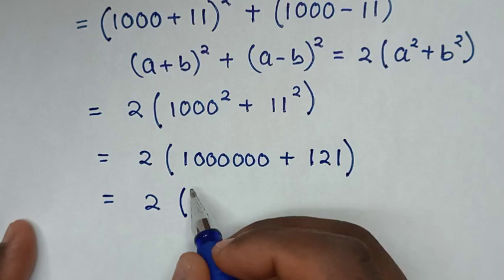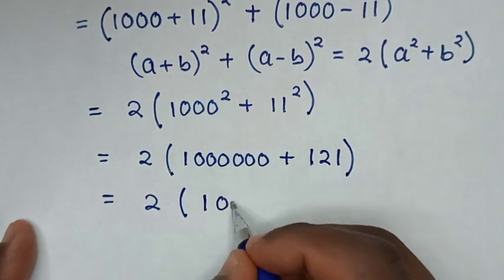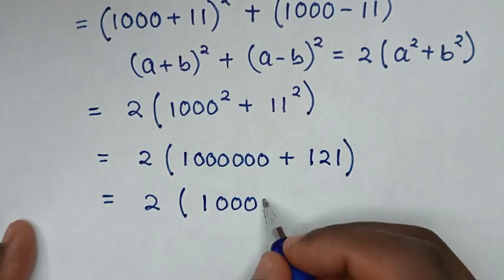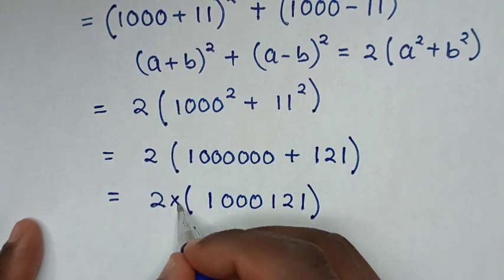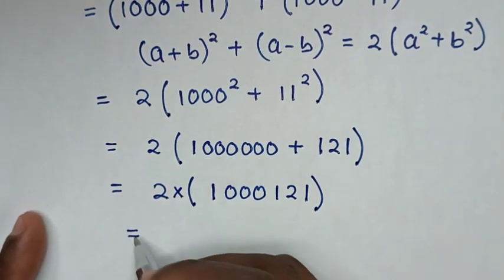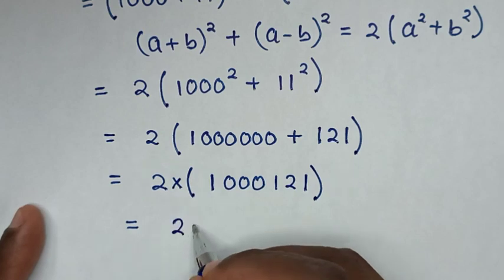So bracket, this plus this it will be 1000121 bracket. Between here we have multiplication, so it will be equal to this times this, it will be 2000242.